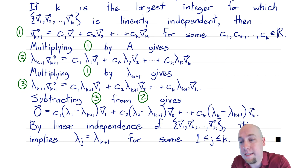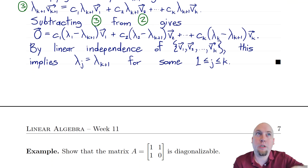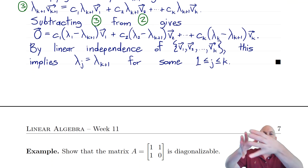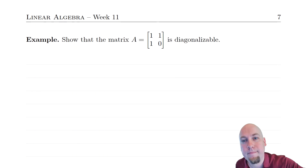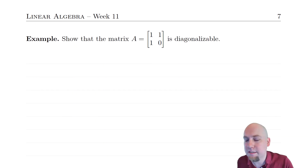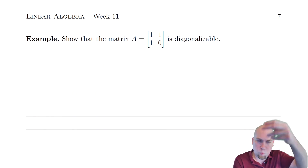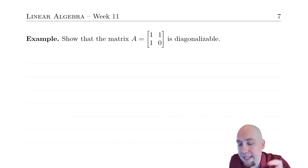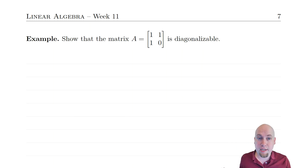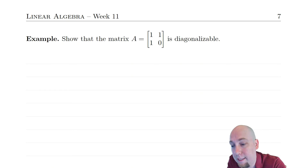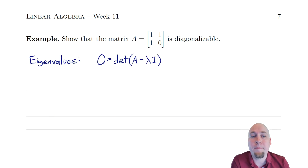We've shown that if a matrix is not diagonalizable, then its eigenvalues are not distinct. Or equivalently, if its eigenvalues are distinct, it must be diagonalizable. Let's go through an example: let's show that the matrix A = [[1,1],[1,0]] is diagonalizable. We're not going to find a diagonalization of it, but we'll show that it is diagonalizable.